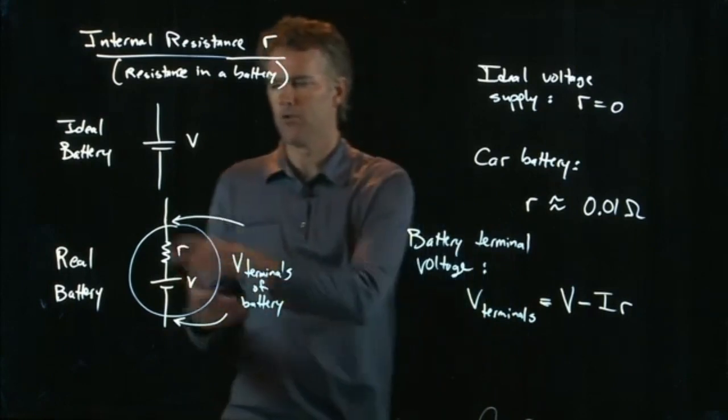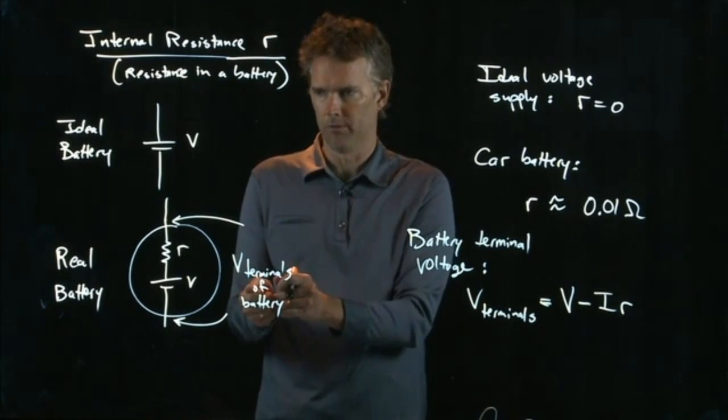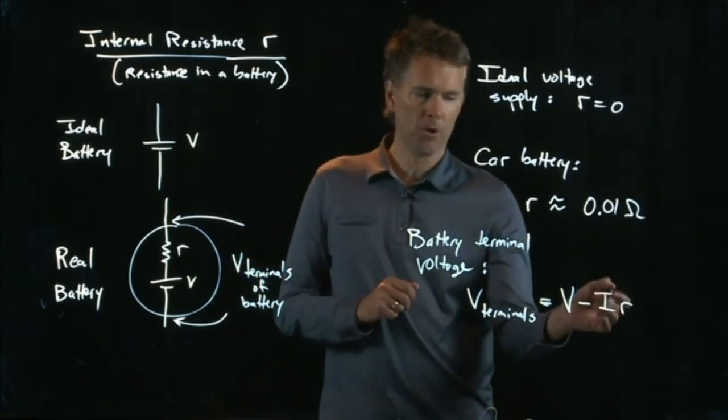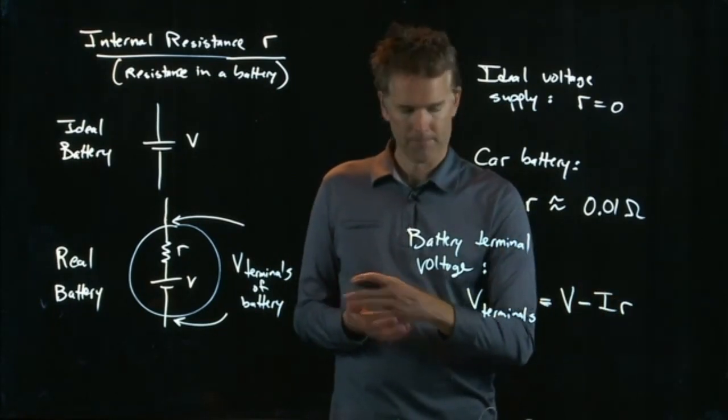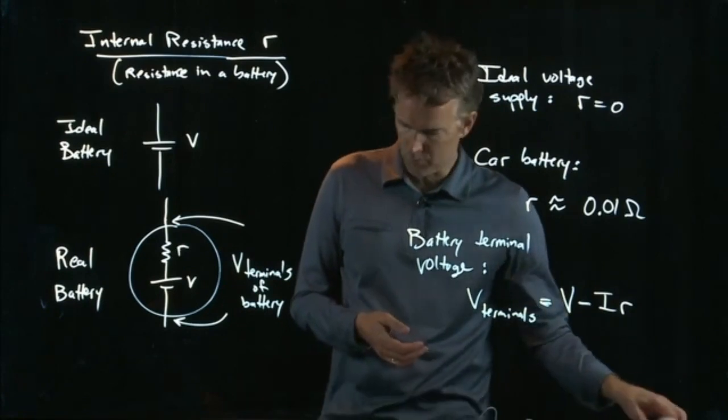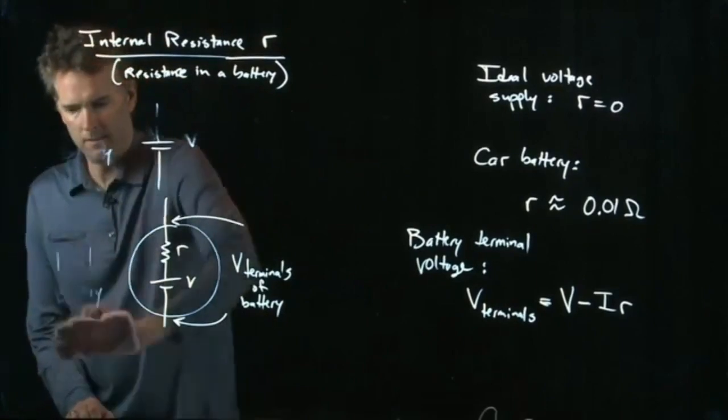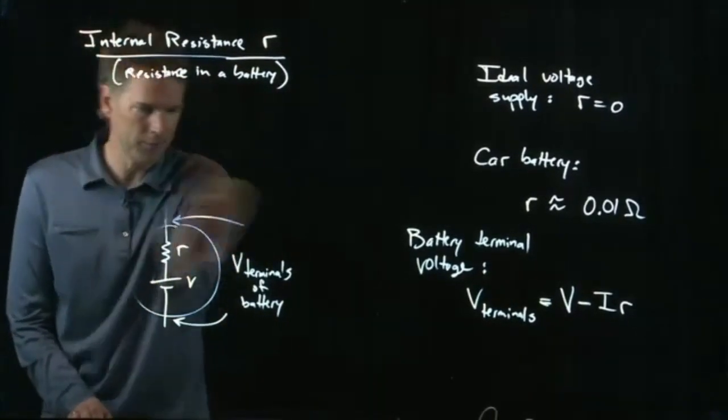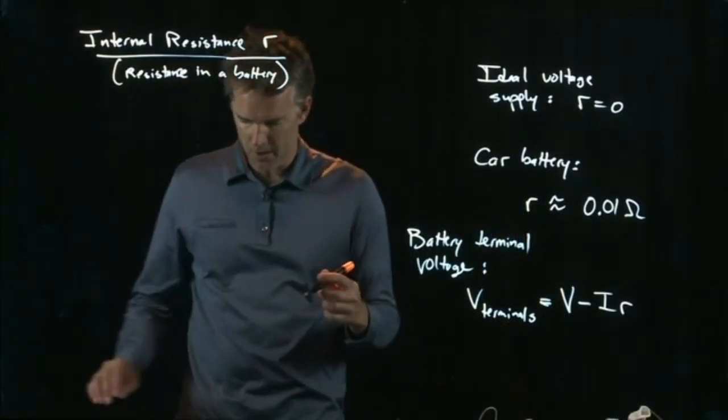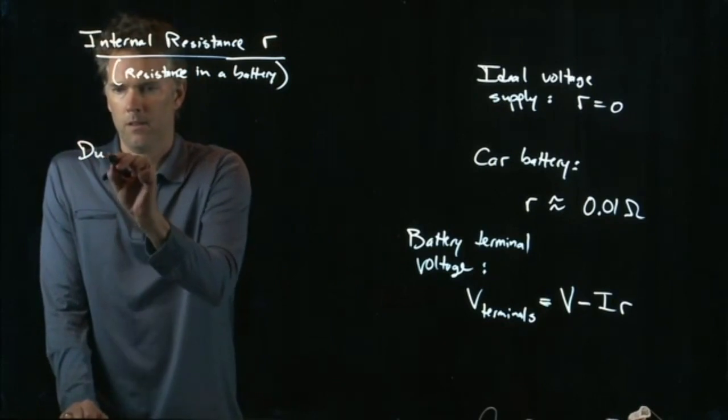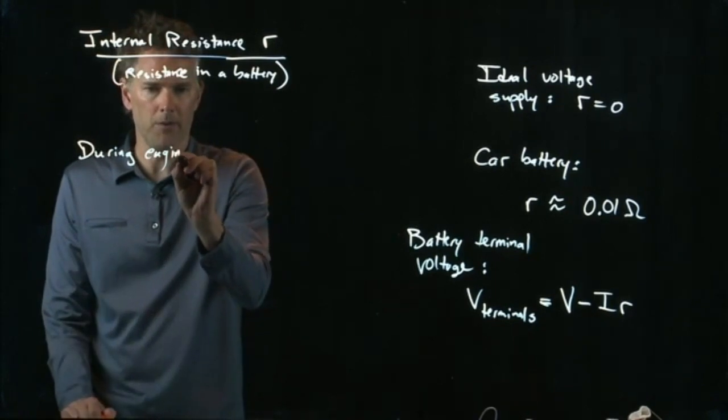So if you're not drawing any current out of your battery, then the voltage is 12 volts. But as you start to draw more and more current out of the battery, the voltage drops a little bit. So let's see what it drops to when we are starting the car battery, when we're starting the engine using the battery as a current supply. So what we said in class was during start, that thing can be drawing 300 amps.